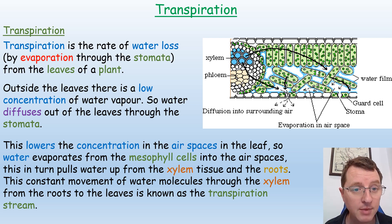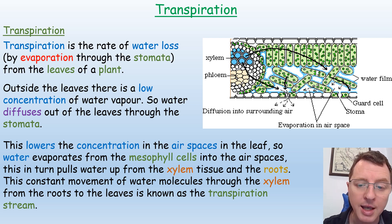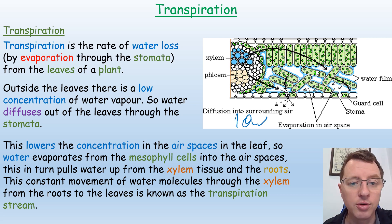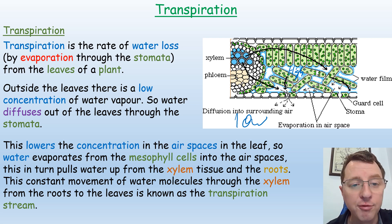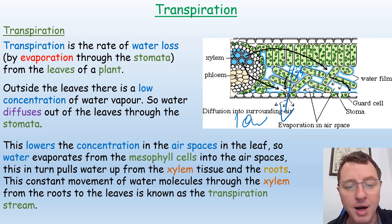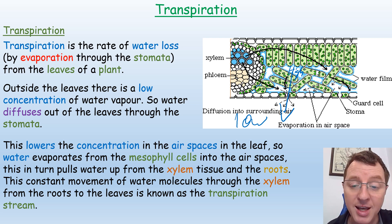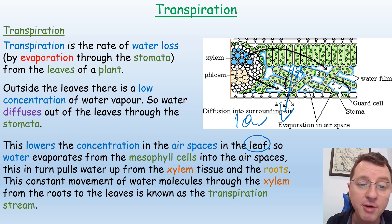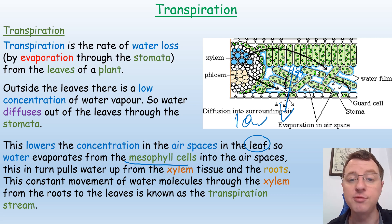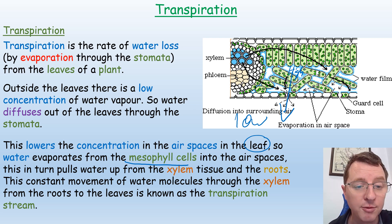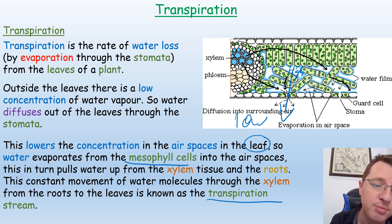It's all to do with diffusion. Outside the leaves there will be a very low concentration of water, and therefore a high concentration of water in the air spaces of the leaf. So water will diffuse out of the leaves through the stomata, moving from a high concentration to a low concentration. This lowers the concentration of water in the air spaces within the leaf, so water evaporates from the mesophyll cells into the air spaces, which in turn pulls water up from the xylem tissues and the roots. This constant movement of water molecules through the xylem from the roots to the leaves is known as the transpiration stream.